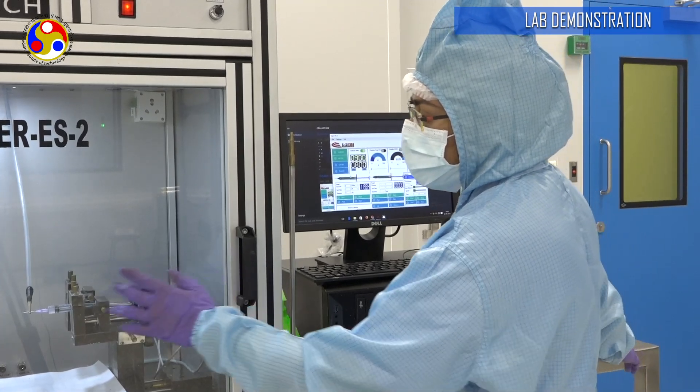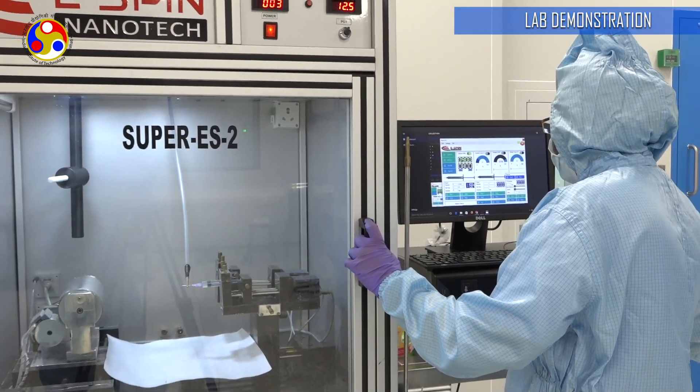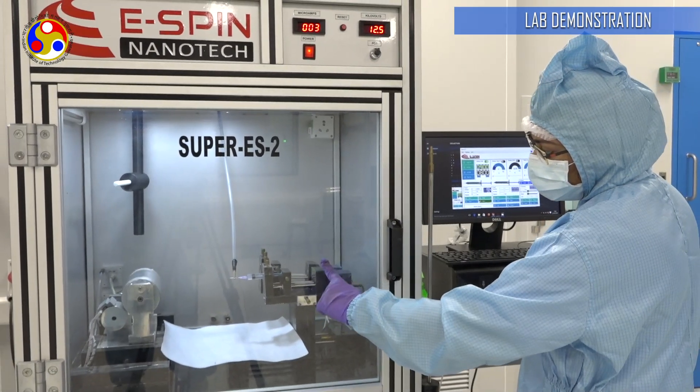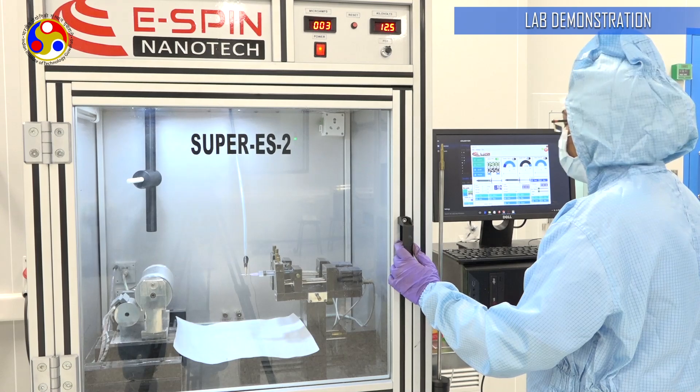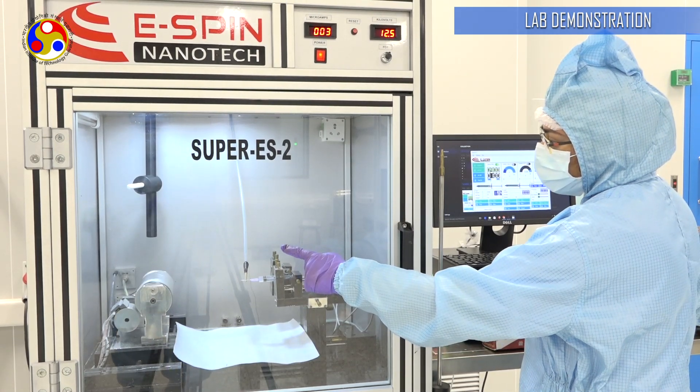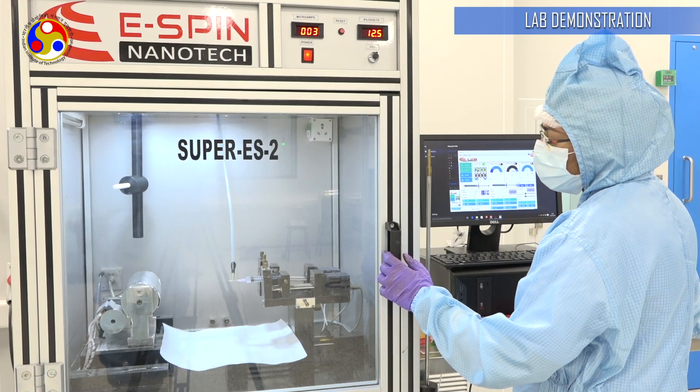Now that I have given a demo, I will also show you how to turn off the machine. First, I am going to stop the flow of the sample, then I am going to reduce the rotational speed of the collector back to 0 and then turn it off.